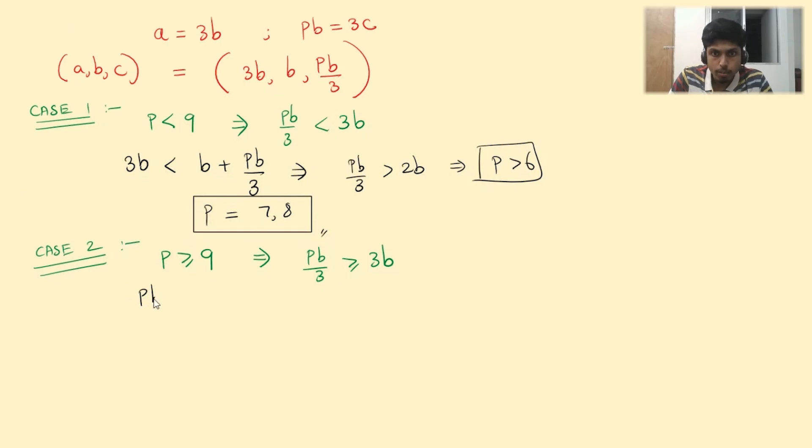So we get pb upon 3 should be less than b plus 3b for this case. So we would get p less than 12. And this gives the possible values as 9, 10 and 11. One should not go to 12 because it's a strict inequality.